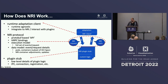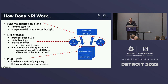Finally, there is the NRI protocol itself, which the adaptation client and the plugins stub use to communicate. The NRI protocol is defined as a protobuf-based API with TTRPC bindings. The protocol defines an execution model and a data model for NRI. The execution model is basically a set of pod and container lifecycle events which NRI knows about and plugins can subscribe to. The data model defines which subset of the OCI spec NRI plugins are exposed to and how that subset can be modified.